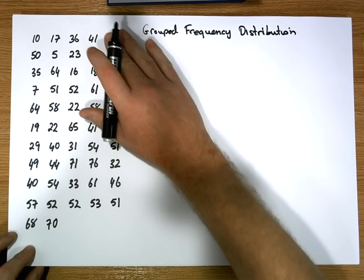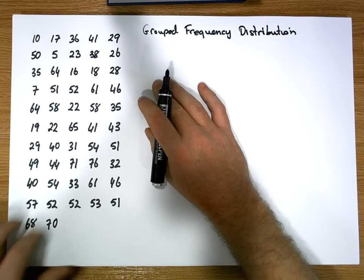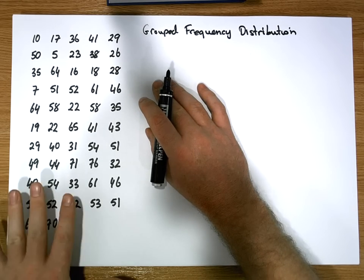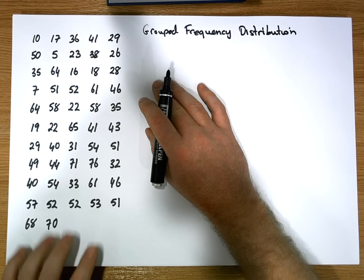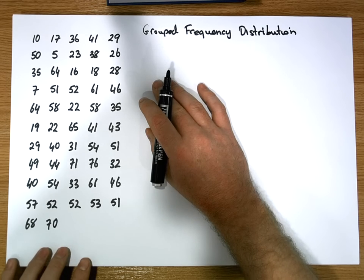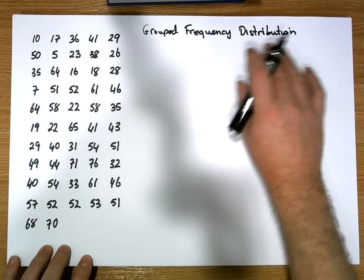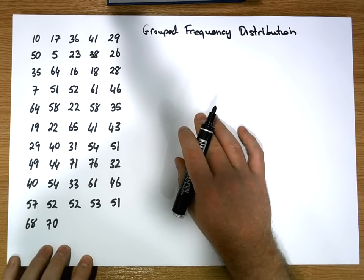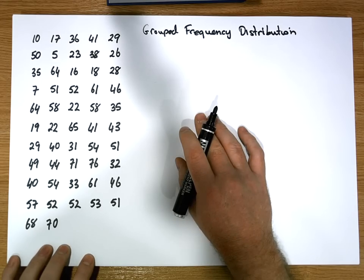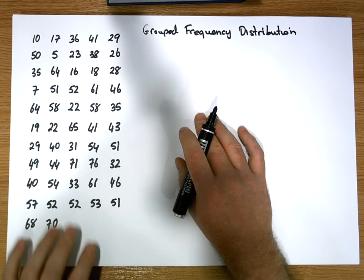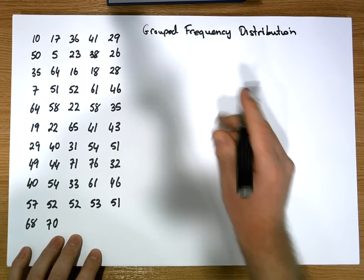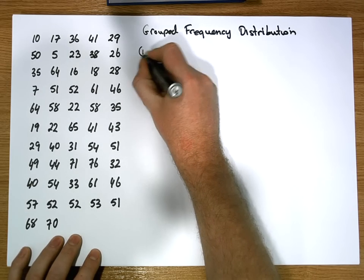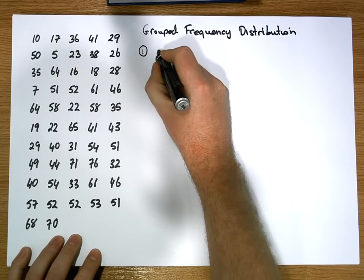What we'd like to do with this raw data — and you can see that this data hasn't been formatted in any way, there's no natural order associated with it — is construct a grouped frequency distribution. For this particular presentation we're going to have four simple steps that will allow us to construct this grouped frequency distribution.